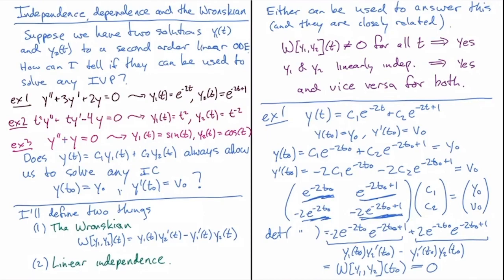That's why if the Wronskian is non-zero everywhere for all t, then for a particular t₀, it's non-zero, and I can solve that particular initial condition. The Wronskian being non-zero for all t guarantees a general solution — y1 and y2 form what's called a fundamental solution set to the differential equation, though we'll usually stick with the term 'general solution.'